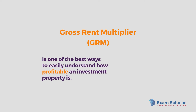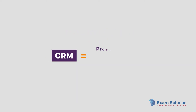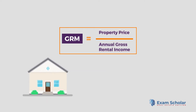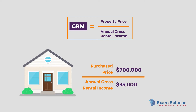This calculation is one of the best ways to easily understand how profitable an investment property is. The formula for a GRM is property price divided by the annual gross rental income. For example, if a property is purchased for $700,000 and has an annual gross rental income of $35,000, you would divide $700,000 by $35,000 to come to a GRM of 20.